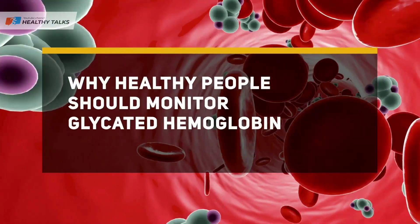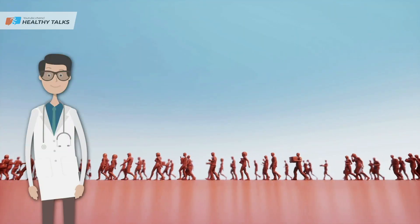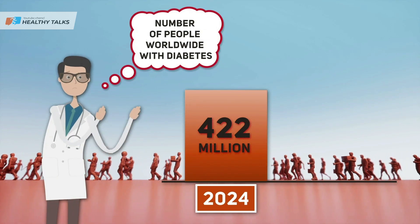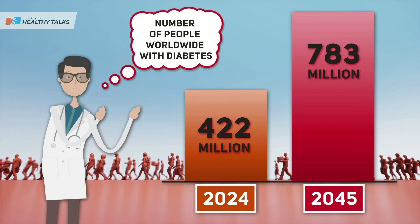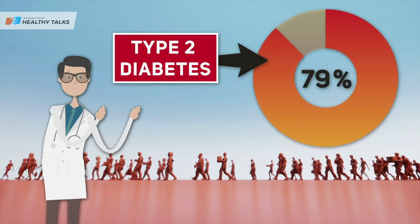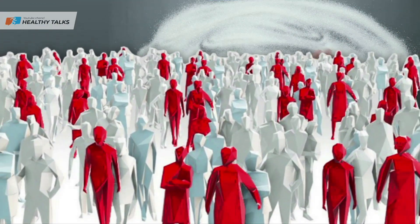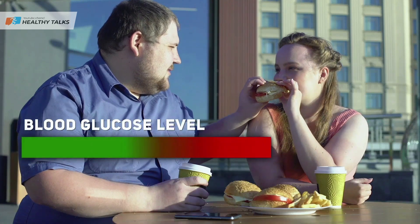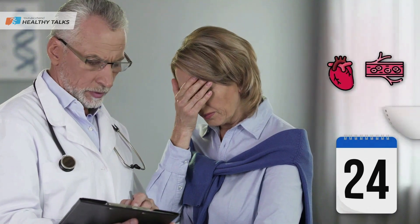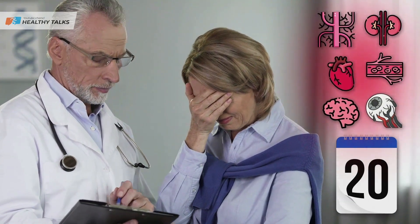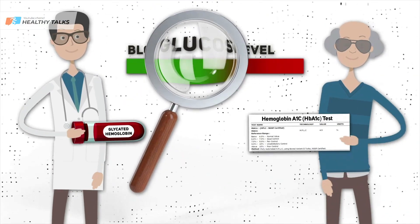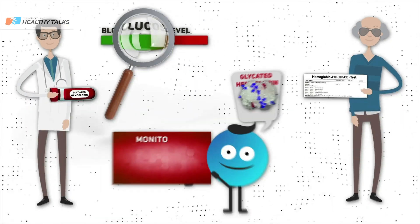Today, about 422 million people in the world have diabetes, and the number is expected to exceed 783 million by 2045. 90% of patients have type 2 diabetes. Moreover, most people live with this disease due to untimely visits to the doctor, as its symptoms may not appear for a long time. Often a person learns about diabetes many years after it starts, facing complications such as heart disease, vascular disease, and damage to other organs. This is why monitoring glucose levels, particularly through glycated hemoglobin testing, is critical to preventing this disease.